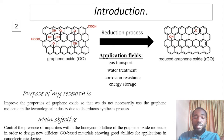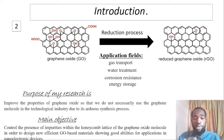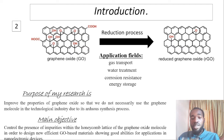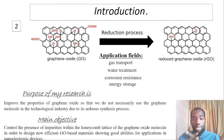Its usefulness has been revealed not only in the synthesis process of pure graphene, but also in many technological fields, namely gas transport, water treatment, corrosion resistance, and energy storage. However, despite the considerable technological interest of graphene oxide, research has not stopped improving its intrinsic properties, which remain diminished compared to those of pure graphene.